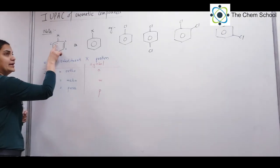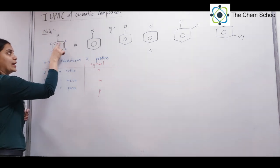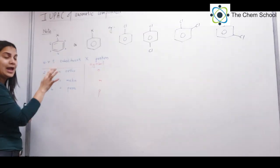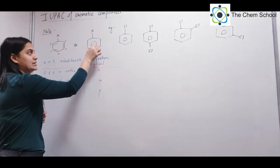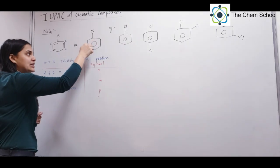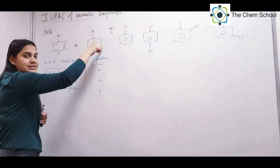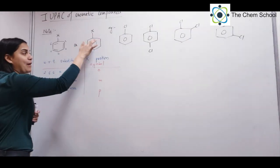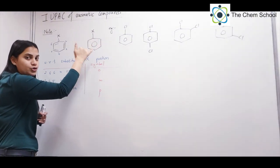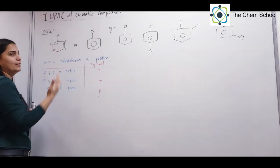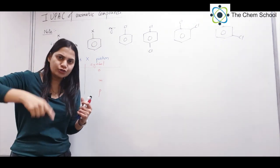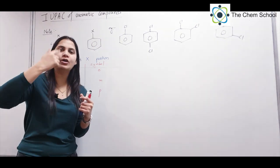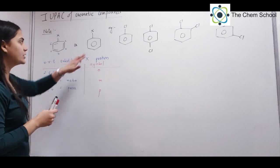In any aromatic compound, there are alternate double bonds and single bonds: double bond, single bond, double bond, single bond, double bond, and single bond. You can also represent this with a circle, which indicates that the pi bond is moving inside — that is conjugation. When alternate double and single bonds are present, we call it a conjugated structure, because the pi bond is continuously moving. So we can draw it as a circle.